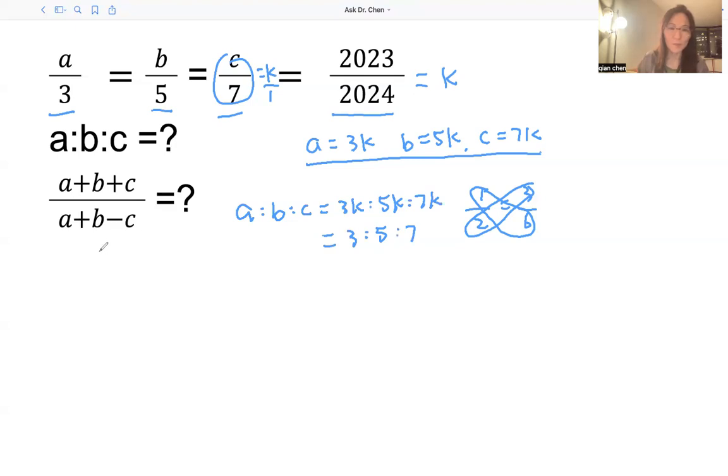Let's answer the second one. We substitute each variable with k: A equals 3k, B equals 5k, and C equals 7k. So we have (3k + 5k + 7k) divided by (3k + 5k - 7k). Every term has k, so we can factor it out. The numerator: 3 plus 5 plus 7 equals 15k. The denominator: 3k plus 5k is 8k, minus 7k is 1k. So 15k over 1k equals 15 divided by 1, which is 15. I hope this makes sense to you.